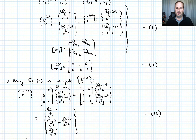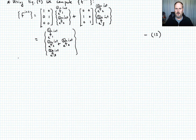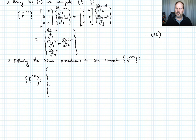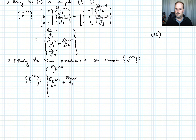We can write the same thing for the external force vector — the only thing that changes is replacing 'int' with 'ext'. Following the same procedure, the global external force vector has F1_ext^(1) in the first slot, F2_ext^(1) + F2_ext^(2) in the second, and F3_ext^(2) in the third. Call that equation 14.